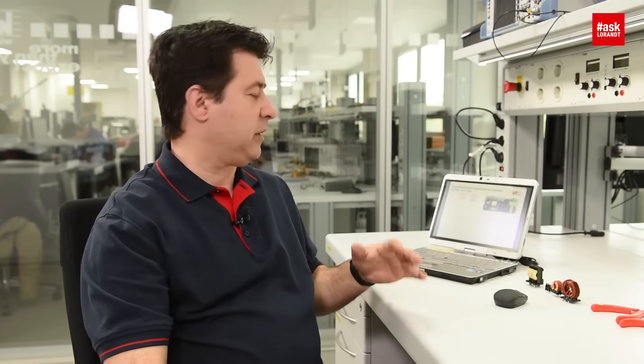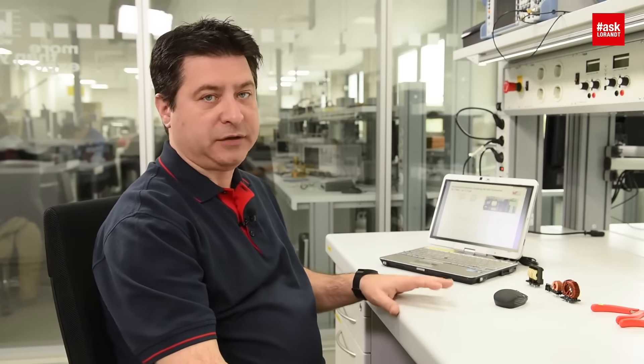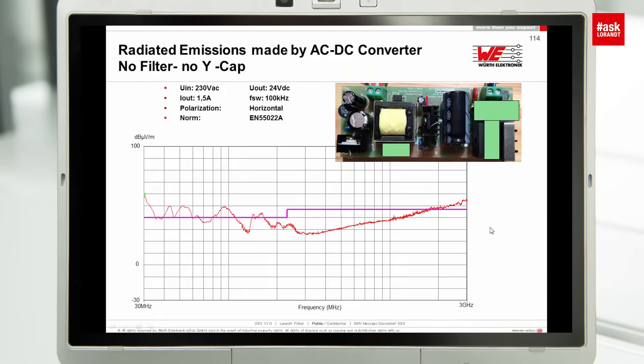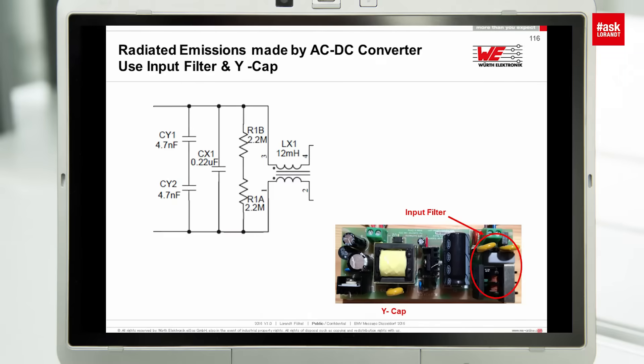After we took out all these different common mode choke and Y caps and X2 caps, we made some measurements and you can see in this graph you have a quite noisy area for the radiated emission. As soon as you are using this different filtering and you put first of all the Y cap from the primary to secondary across the transformer, you may see that your noise will be a little bit better in the lower frequency area and also you will have some better attenuation.